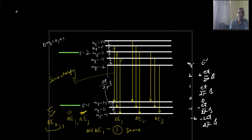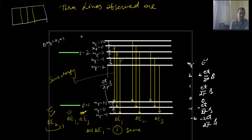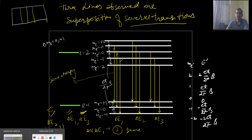Thus the three observed lines are a superposition of several transitions. This is all about the first-order Zeeman effect explained with the help of perturbation theory.